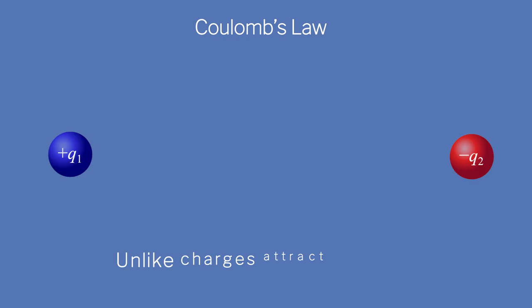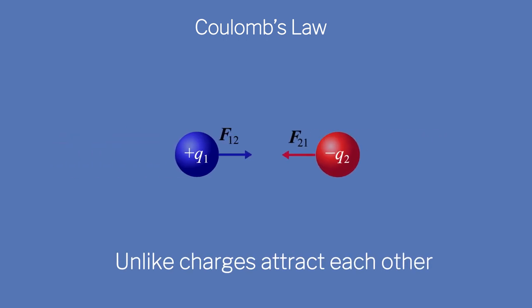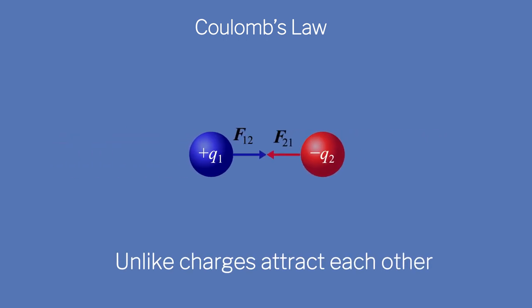Now let's learn about attraction due to unlike charges. According to Coulomb's law, unlike charges attract each other. Thus, a negative charge attracts a positive charge. The attraction acts along the line of the two charges.